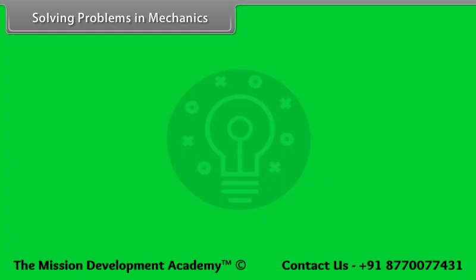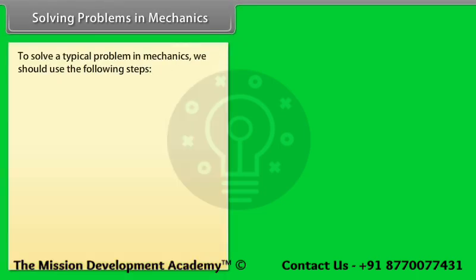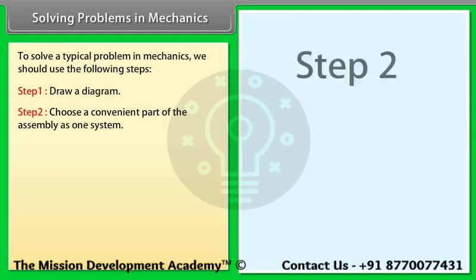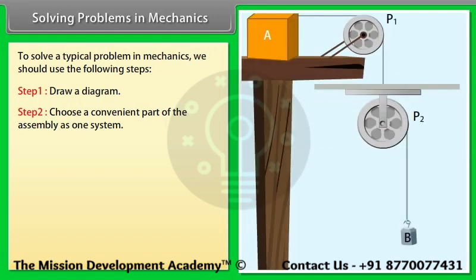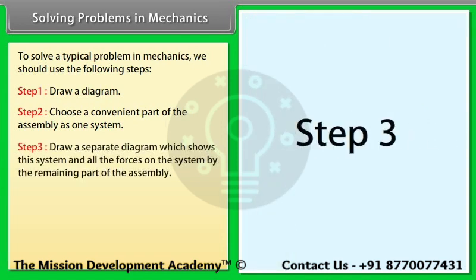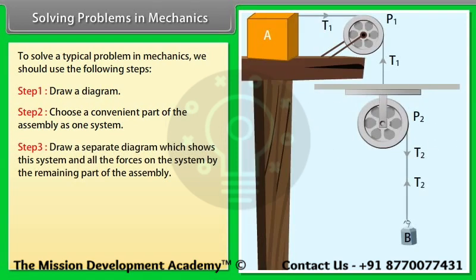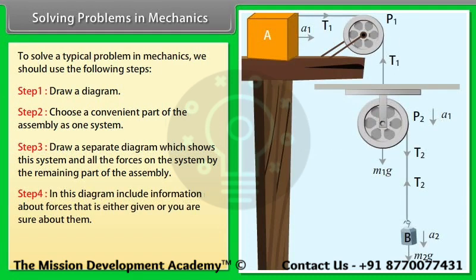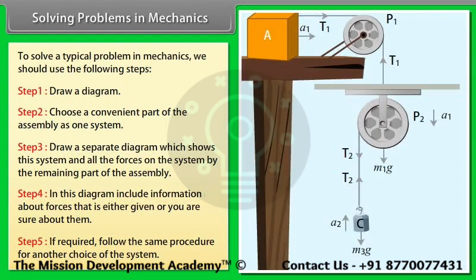Solving problems in mechanics: To solve a typical problem in mechanics, follow these steps. Step 1: Draw a diagram. Step 2: Choose a convenient part of the assembly as one system. Step 3: Draw a separate diagram showing this system and all forces on it from the remaining part of the assembly. Step 4: Include information about forces that are either given or known. Step 5: If required, follow the same procedure for another choice of system.